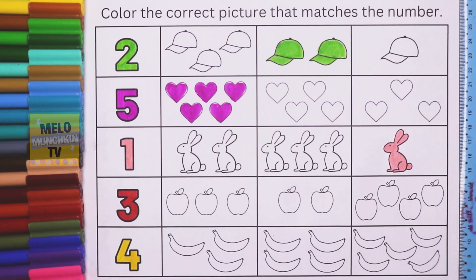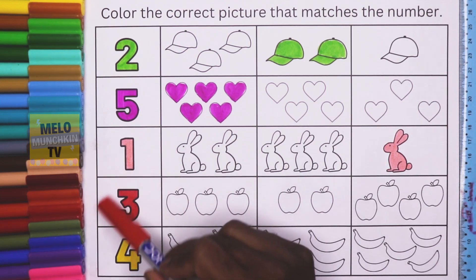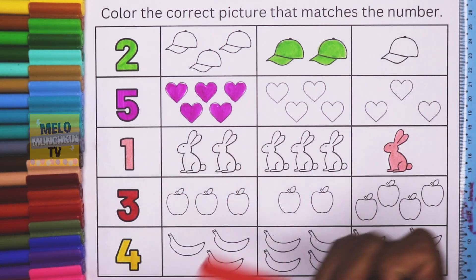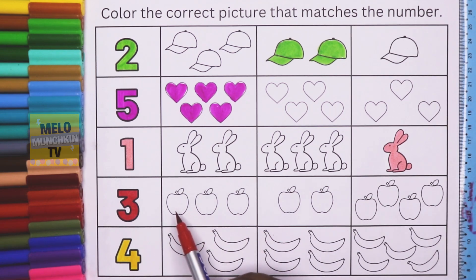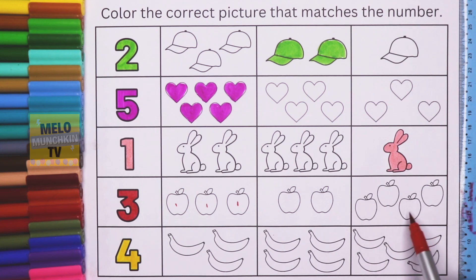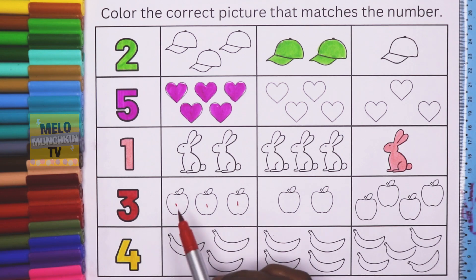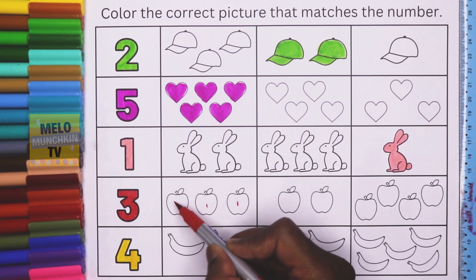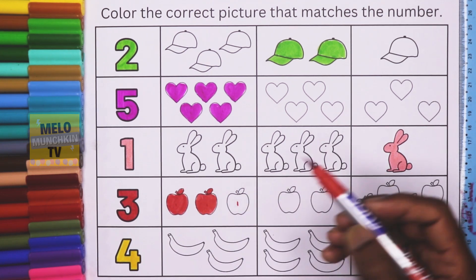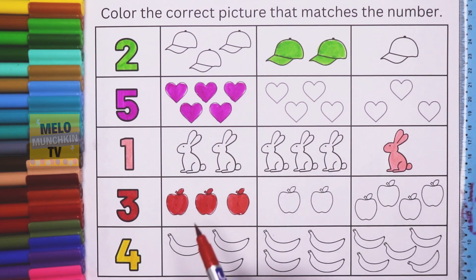The fourth number is 3 and the color inside is red. I need to find three apples. In the first box there are 1, 2, and 3 — let me check the others. The second box has 2 apples and the last box has 1, 2, 3, 4 apples. So the first box with exactly 3 apples is the correct answer. I'll color it: 1, 2, and 3.